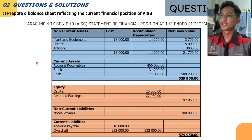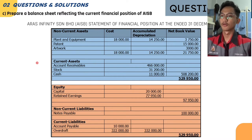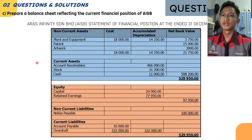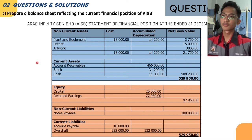Moving on to sub-question C for question 1, which asks us to prepare a balance sheet for AISB company. The title for this balance sheet is AISB Statement of Financial Position at 31 December 2021. A balance sheet is a summary of the financial position for AISB company, and it is divided into three categories: assets, stockholders' equity, and liabilities.